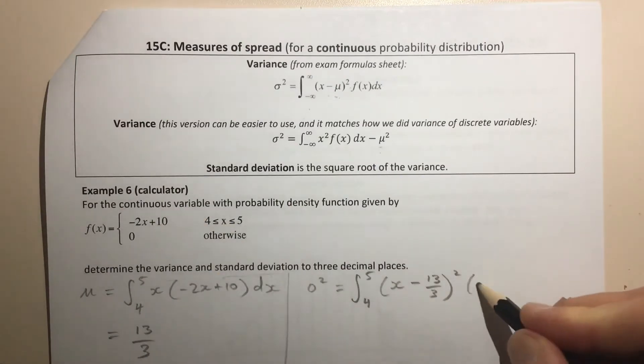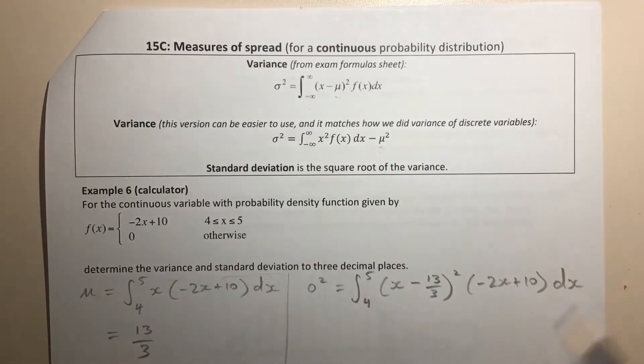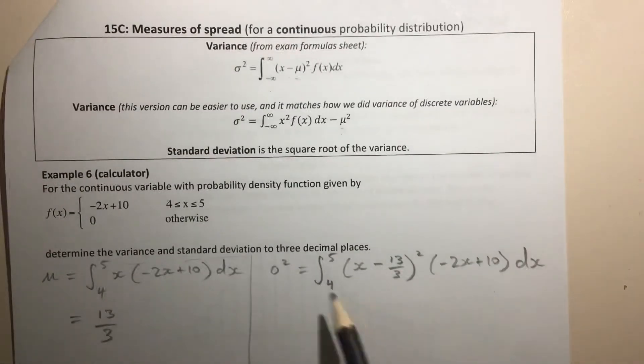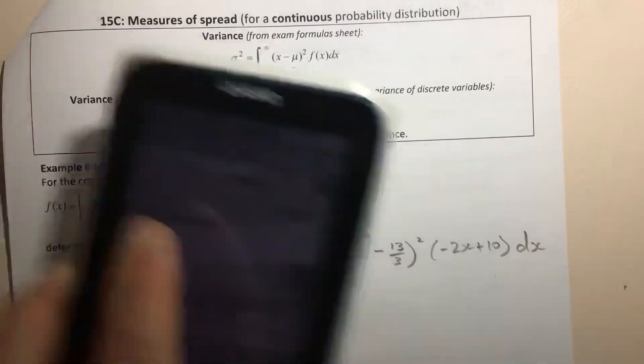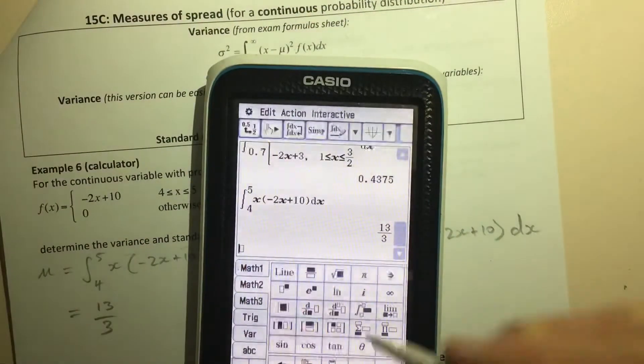so times -2x + 10 with respect to x. So this integral here should give us the variance. Let's pop that in the CAS.